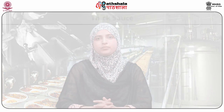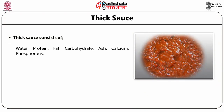Thick sauce consists of water, protein, fat, carbohydrate, ash, calcium, phosphorus, iron, thiamine, riboflavin, and nicotinic acid. In every 100 grams of thick sauce there are water about 39g, protein 20.9g, fat 11.2g, carbohydrates 2g, ash 24.9g, calcium 245 mg, phosphorus 174 mg, iron 16.1 mg, thiamine 0.05 mg, riboflavin 0.78 mg, and nicotinic acid about 2.1 mg.